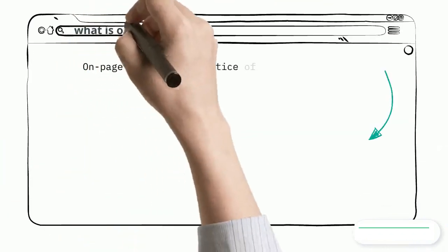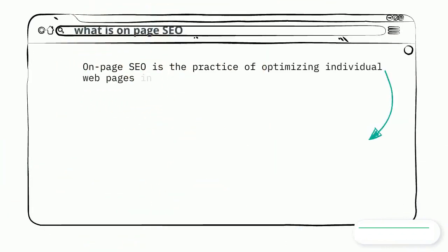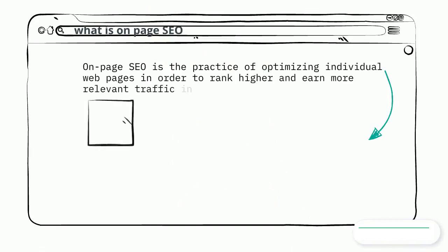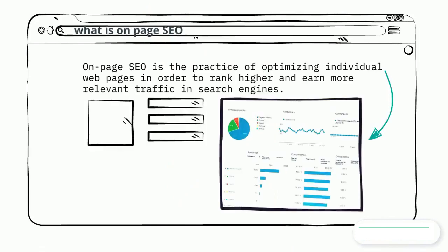What is on-page SEO? On-page SEO is the practice of optimizing individual web pages in order to rank higher and earn more relevant traffic in search engines.